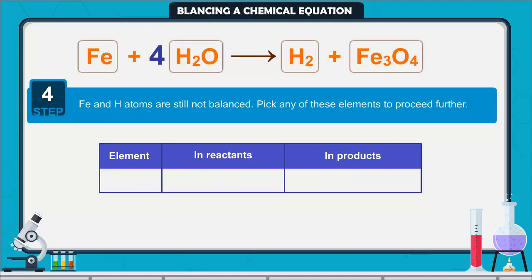Step 4. Iron and hydrogen atoms are still not balanced. Pick any of these elements to proceed further.